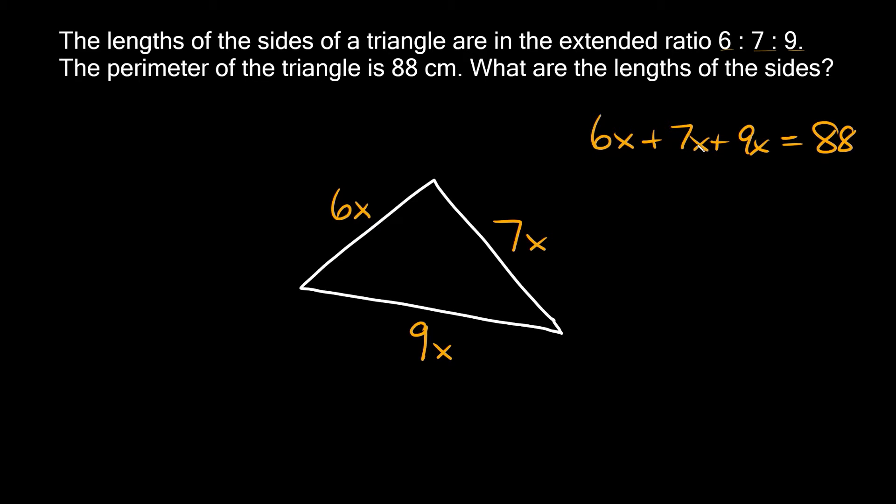So here 6 plus 7 plus 9 equals 22. So we get 22x equals 88. We can divide both sides by 22, so we get that x equals 4. Now that we know what x equals, we can plug it in to each of these.